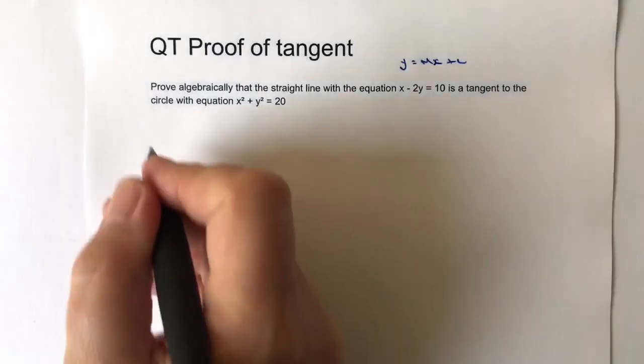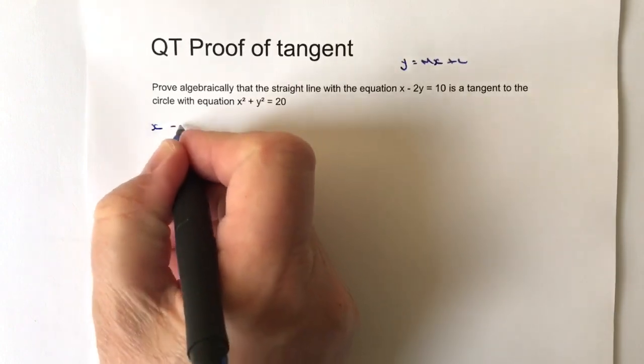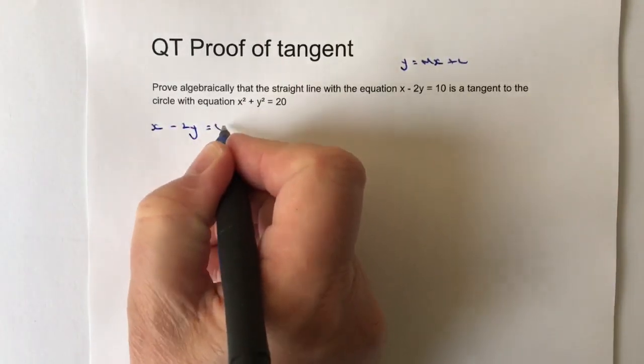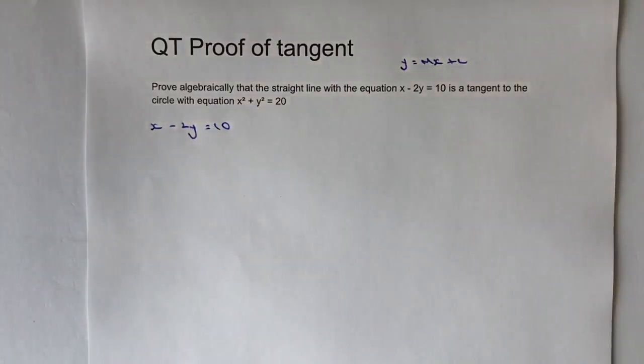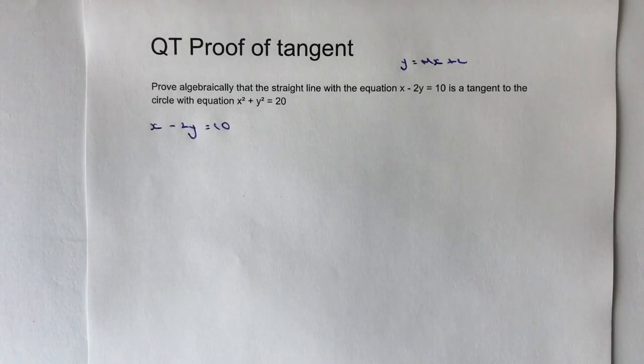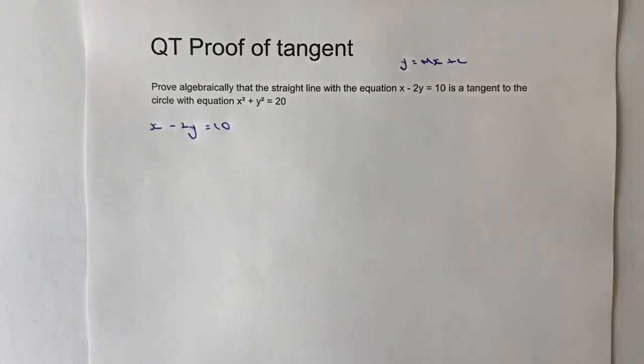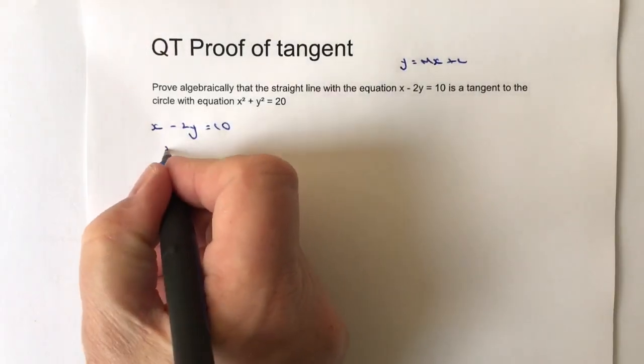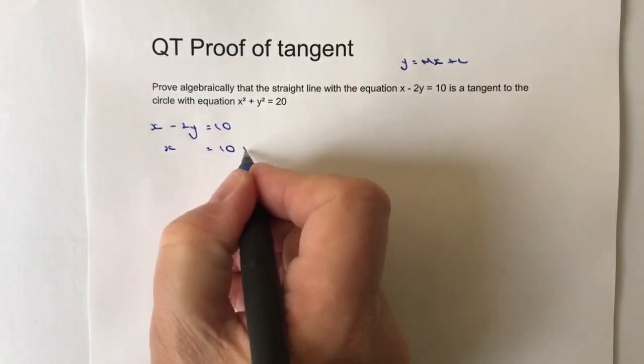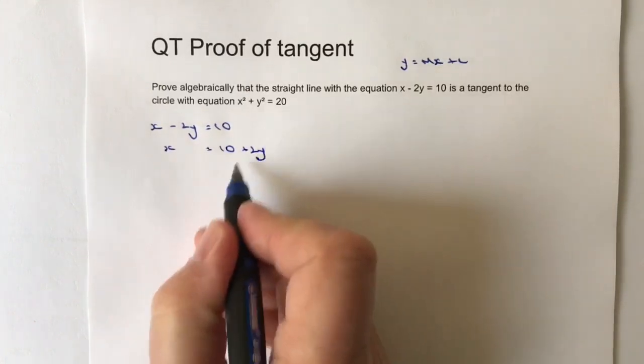What I'm going to do first is rearrange it so that I get y as the subject of this particular formula, because then hopefully I can read it as an equation. The first thing I'm going to do is take this minus 2y and put it over to the right-hand side, so I'm going to get x equals 10 plus 2y. I've got a positive value of y which is perfectly fine, and I want to keep it that way, but I'm going to get this 10 over to the other side, so I'm going to get x minus 10 equals 2y.